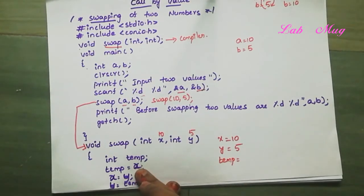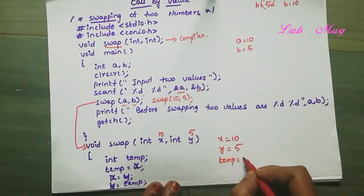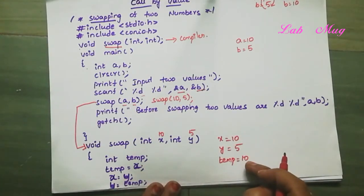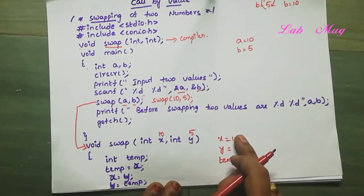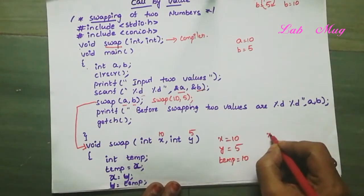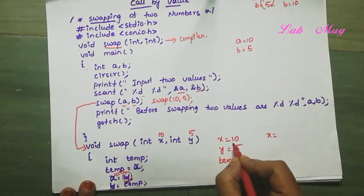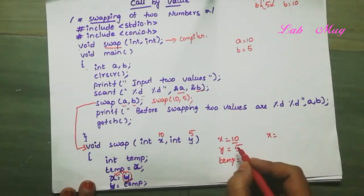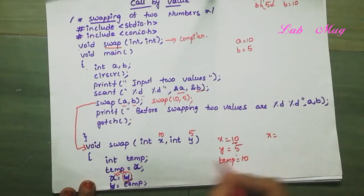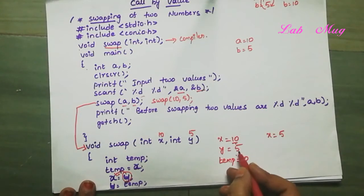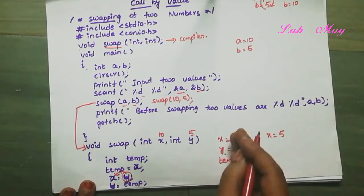First, temp is equal to x, so temp stores 10. The x value is now copied into temp. Next, x is equal to y: the right side has the value, so x becomes 5. Then y is equal to temp, so y becomes 10. After this, x is 5 and y is 10.